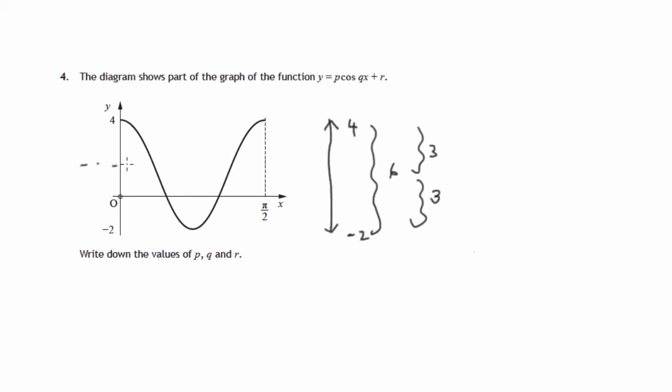So the amplitude is 3. If we take a middle line, a mean value there, this graph moves 3 above that, 3 below that. That's actually y equals 1, that mean line. So the amplitude is equal to 3. So P is equal to 3.